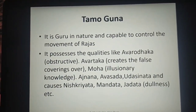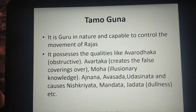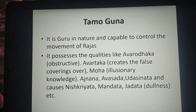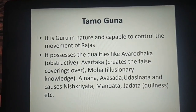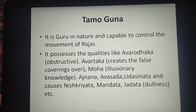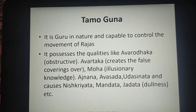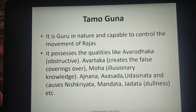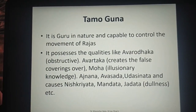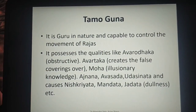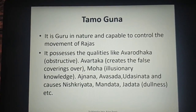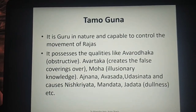Tamogun is Guru in nature and capable of controlling the movement of Rajas. Since Rajogun has Chala Gati (motion), Tamogun is capable of controlling it. Tamogun possesses qualities like Avarodhak (obstructive), Avartak (creates false covering), Moha (illusionary knowledge), Ajna (ignorance), Avasad (lack of enthusiasm), Udasinta (indifference), and causes Nishkriyata, Mandta, and Jadta — meaning dullness and not performing anything.